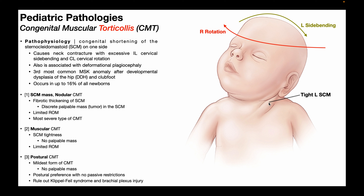This infant was born with a tight left sternocleidomastoid, or a contracture of the left sternocleidomastoid. If we think about the action of the sternocleidomastoid when it contracts unilaterally, it would promote ipsilateral side bending and contralateral rotation. So if the baby's SCM on the left is tight or has a contracture, the baby's neck will be positioned at rest in excessive ipsilateral cervical side bending and contralateral cervical rotation. For a left SCM that's tight, the baby's neck will be positioned in left side bending and right rotation.